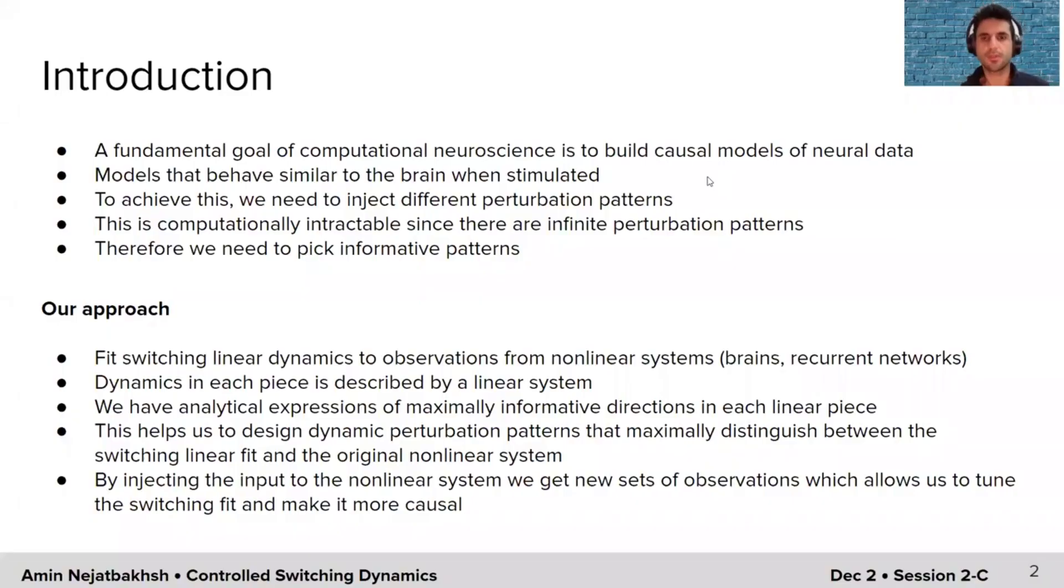To quickly introduce the idea and our main framework, first I'll give a quick motivation. In computational neuroscience, a fundamental goal is to build models that causally reflect the properties of neural systems. What we mean is that we want to build models that behave similar to the brain during stimulation, not only for spontaneous activity and stimulus-driven activity, but also when you inject some sort of perturbation into the system. We want a model to reproduce the observations.